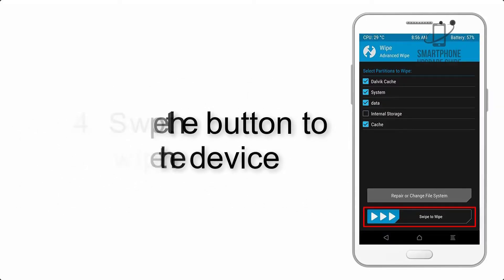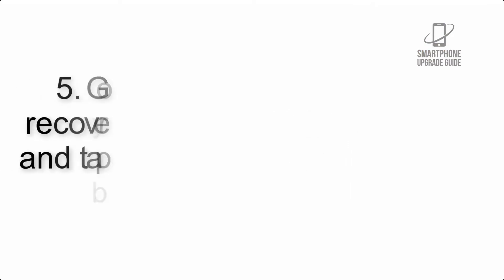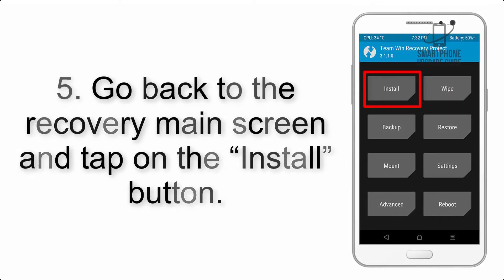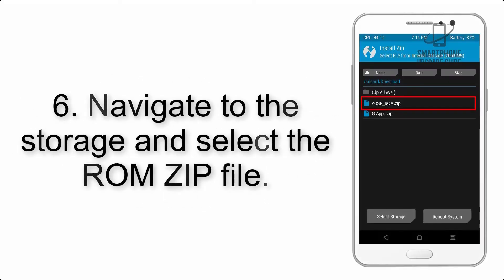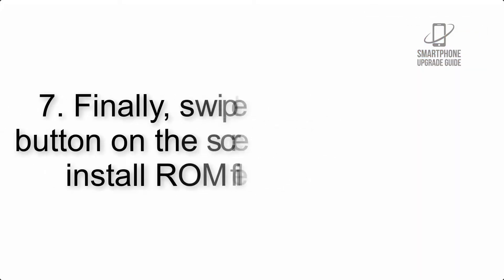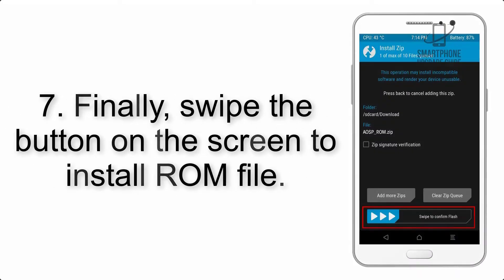Step 4: Swipe the button to wipe the device. Step 5: Go back to the recovery main screen and tap the Install button. Step 6: Navigate to the storage and select the ROM zip file.